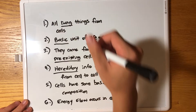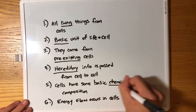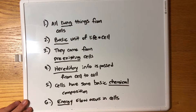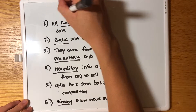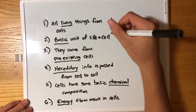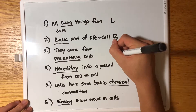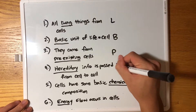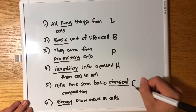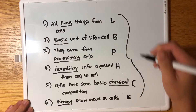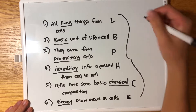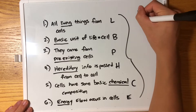Now I'm just going to underline all the most important words in these, so you've got: living, basic, pre-existing, hereditary, chemical, and energy.